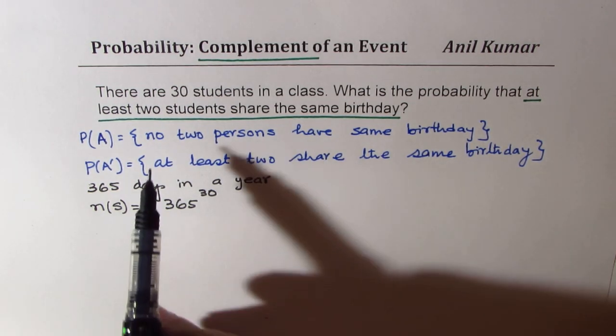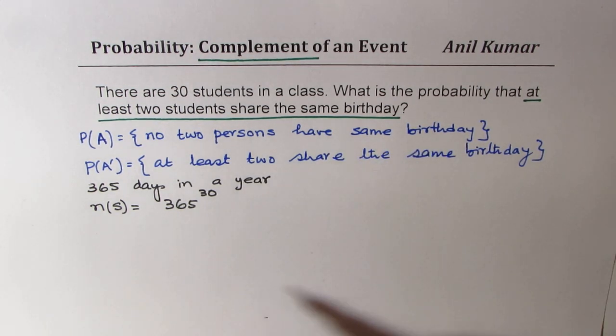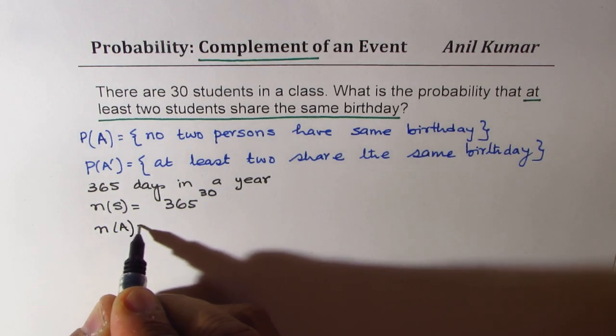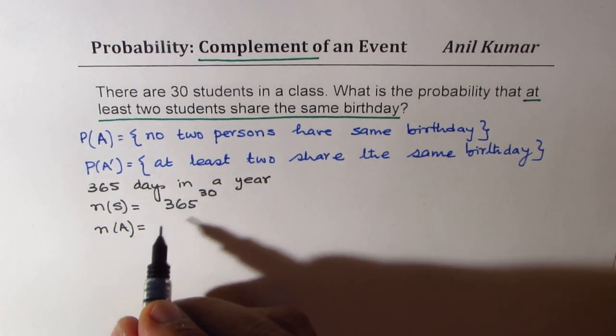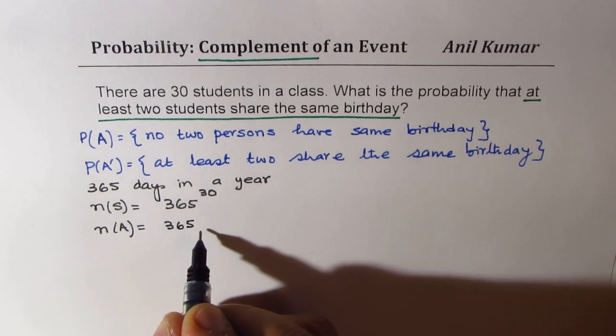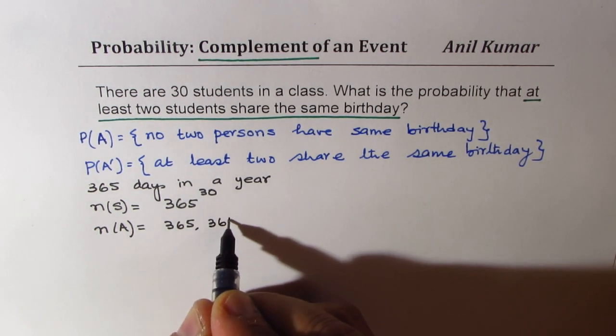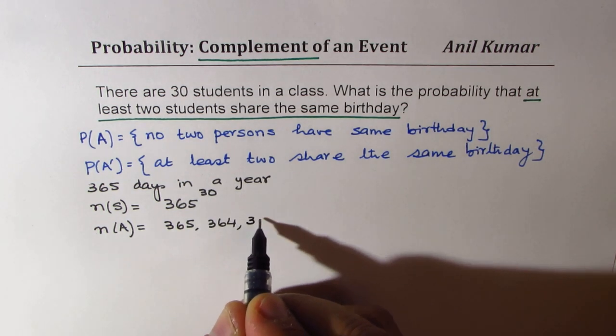Now when we talk about no two persons have the same birthday, in that case, the favorable event is what? If the first person selects, the first person has a choice of 365 days. Now once one day is selected, the other person has only 364 days to go and then it is 363.